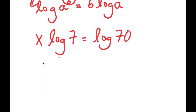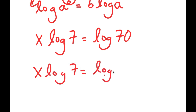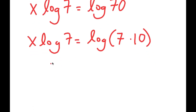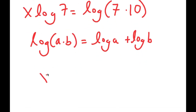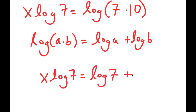Now log 70 is the same thing as log of 7 times 10. Another property of logarithms is that log of a times b equals log a plus log b. So log of 7 times 10 is going to equal log 7 plus log 10.